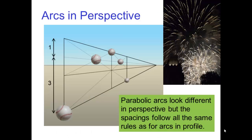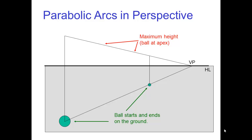Getting back to sketching parabolic arcs, let's look at them in perspective. While they look different, the spacings follow all the same rules as for arcs in profile. Again, we start with the first and last points, which we put on the ground plane. The line connecting them intersects the horizon line, HL, at the vanishing point, VP.